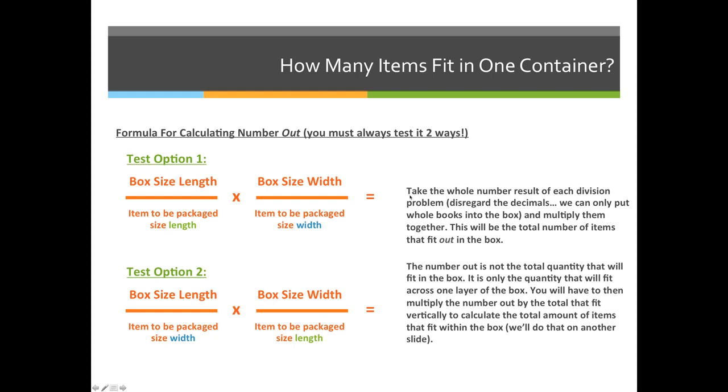Now, take note that the whole number result of each division problem is the number you're going to keep. So if I divide the box length divided by the item length, and I get 8.4, I can only say that 8 will fit out because I can't have 0.4 of a book or an item. So I just take the whole number and keep that.